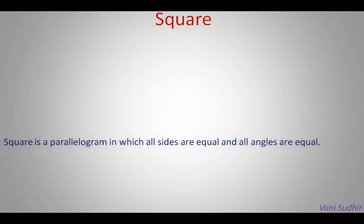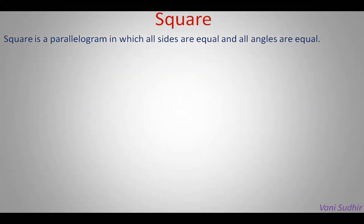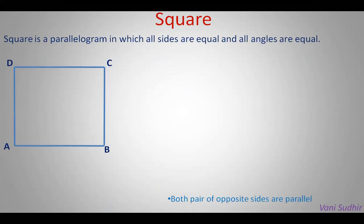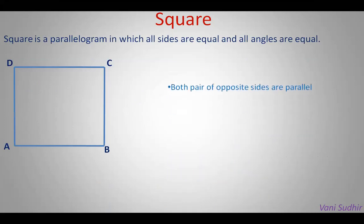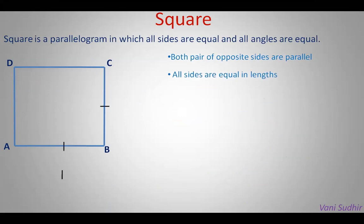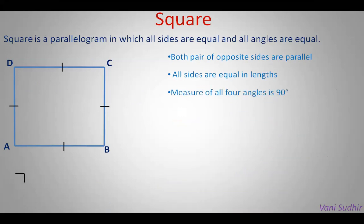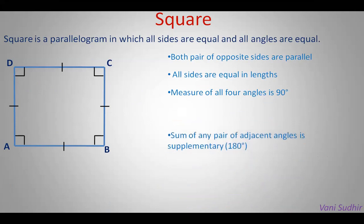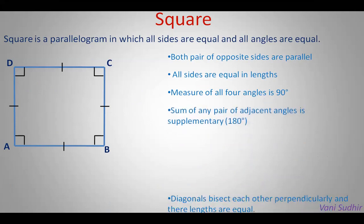Square is a parallelogram in which all sides are equal and all angles are equal. Both pairs of opposite sides are parallel, all sides are equal (AB equals BC equals CD equals AD), and the measure of all four angles is 90 degrees. The sum of any pair of adjacent angles is supplementary. Diagonals bisect each other perpendicularly and their lengths are also equal.